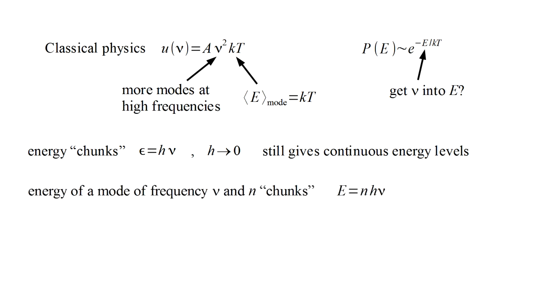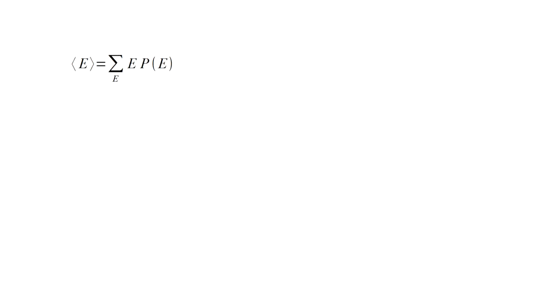So if a mode of frequency nu has n chunks of energy, the mode energy is E equals n times h times nu. Now Boltzmann's distribution says that the probability this mode will have this energy is a constant A times the exponential of minus n h nu over kt. To make the sum of all probabilities be 100%, the constant A needs to be that shown here in parentheses. Now we calculate the average energy. This is the sum over all possible energies of the energy times the probability of that energy. Putting in our expressions for E and p of E, and summing from zero to an infinite number of energy chunks, we end up with the results shown at the right.